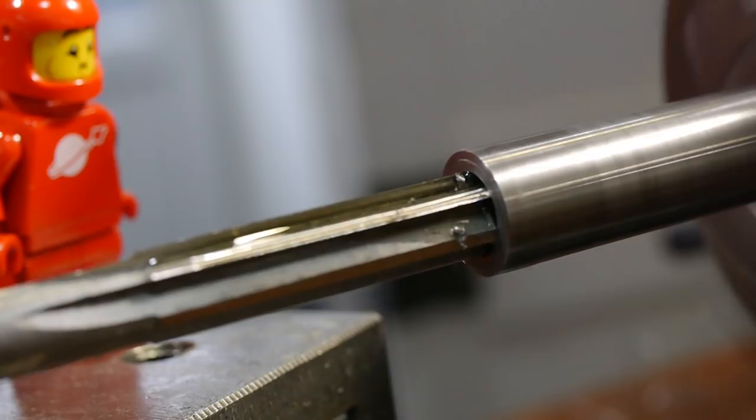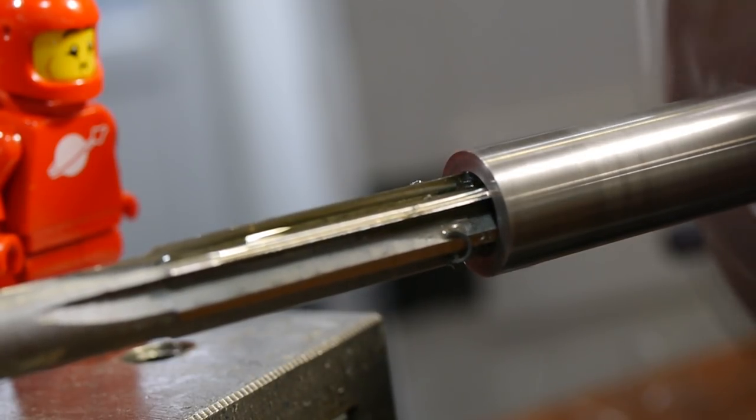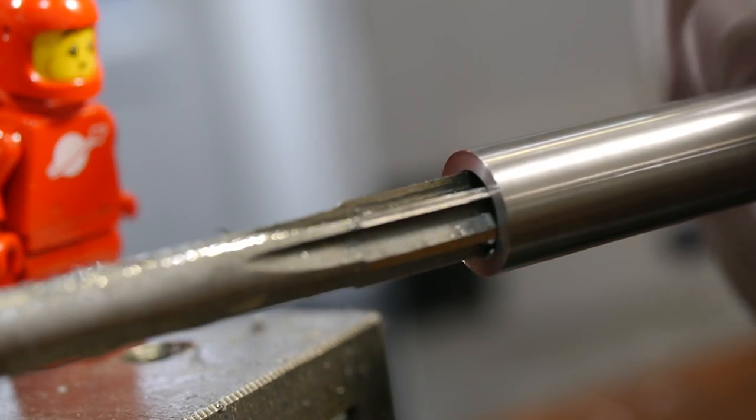The bottom of the hole needed to be flat to provide a firm seat for the spring, so off-camera I used an 8mm counterbore cutter to flatten out the shape left by the drill profile.